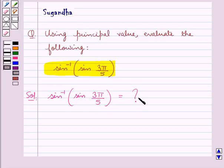Using the principal value, we know that sine inverse of sine x is equal to x. Therefore, sine inverse of sine 3 pi by 5 would be equal to 3 pi by 5.